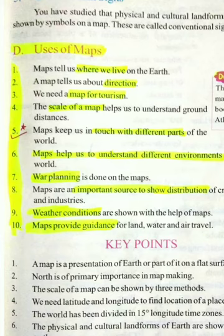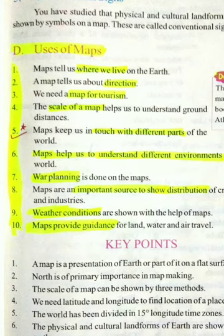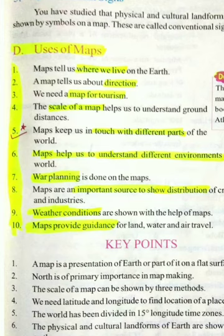People who travel to different countries are called tourists — سیاحوں کو tourist کہتے ہیں. Map helps tourists easily reach any place. So map is helpful for tourists — map کے ذریعے سے وہ کسی بھی جگہ پر آسانی سے جا سکتے ہیں.